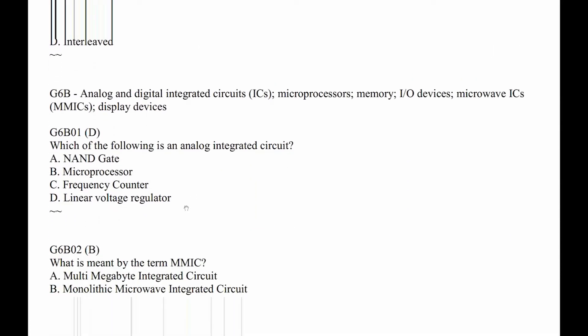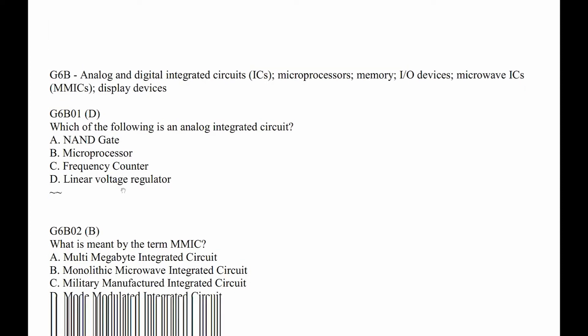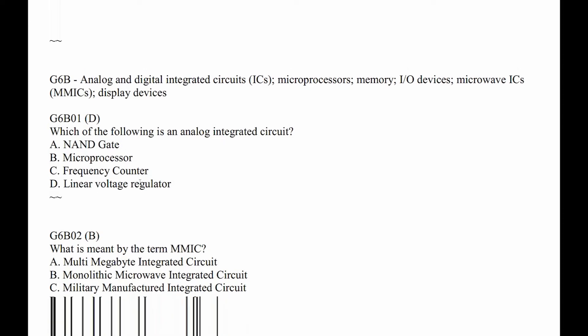Which of the following is an analog integrated circuit? Digital, digital, digital, analog. I don't know how they do it — a bunch of transistors, they've been around forever. So D, linear voltage regulator.